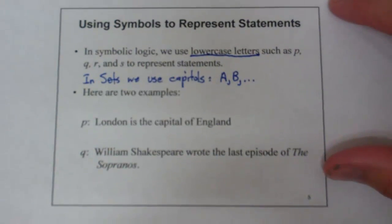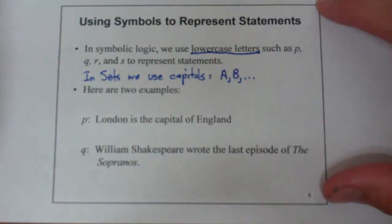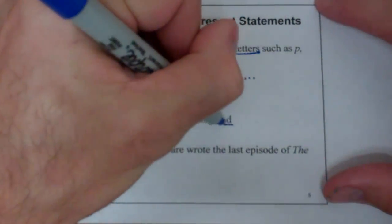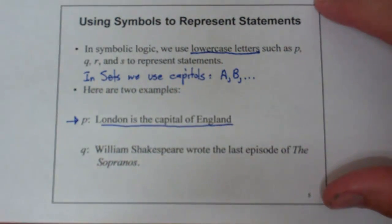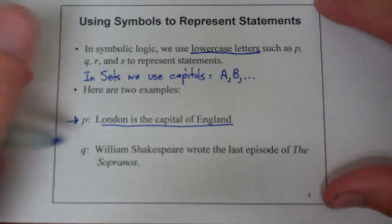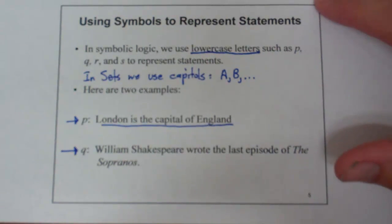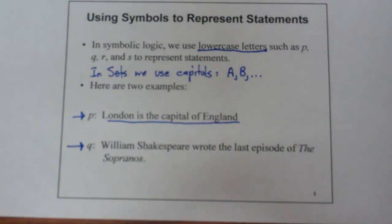Here are two examples. Let p represent 'London is the capital of England' — I am defining that statement with the lowercase letter p. And let q represent 'William Shakespeare wrote the last episode of The Sopranos.' So this allows us to translate into logical forms using p, q, r, s as lowercase letters.